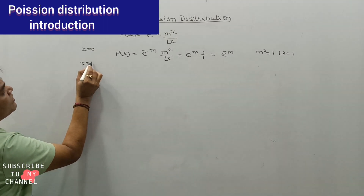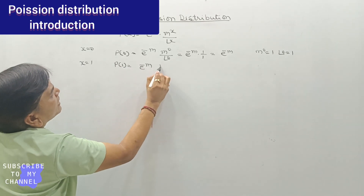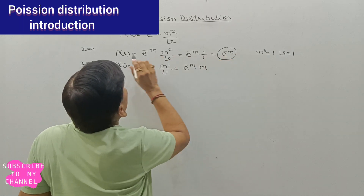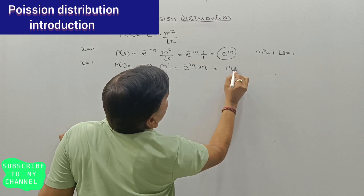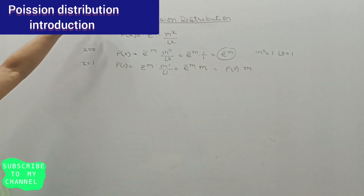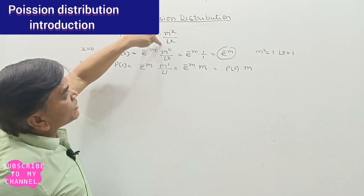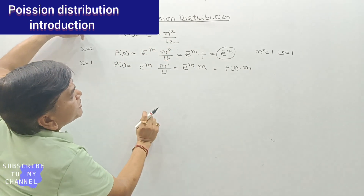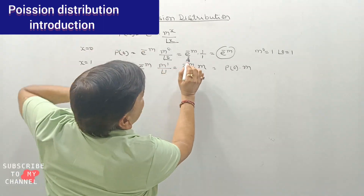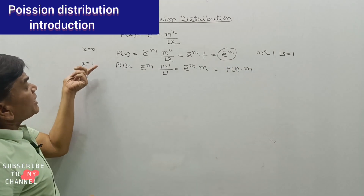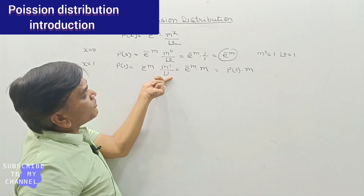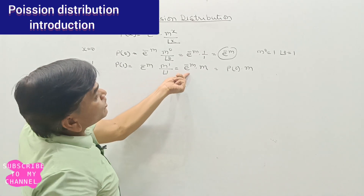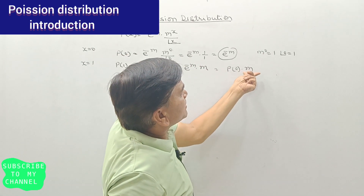If x equals 1, then P(1) equals e raised to power minus m, times m raised to power 1 divided by factorial 1. That is e raised to power minus m multiplied by m. Since e raised to power minus m equals P(0), we can write P(1) equals P(0) multiplied by m. If x equals 2, P(2) equals e raised to power minus m times m squared divided by factorial 2, which can be written as P(0) times m squared divided by 2, or equivalently P(1) times m divided by 2.